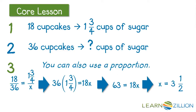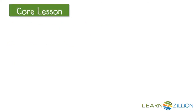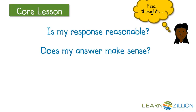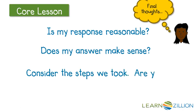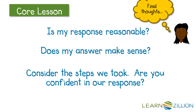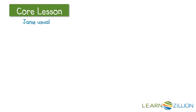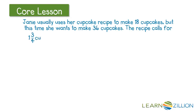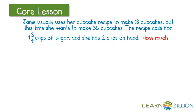So Janie really needs 3 and 1/2 cups of sugar to make 36 cupcakes. Now let's get some final thoughts: Is my response reasonable? Does my answer make sense? Did I consider all of the steps that I took? And am I confident in my response? I've found in two different ways mathematically that Janie needs 3 and 1/2 cups of sugar. But did I answer the question? Go back to the original question — Janie usually uses her cupcake recipe to make 18 cupcakes, but this time she wants to make 36. The recipe calls for 1 and 3/4 cups of sugar and she has 2 cups on hand. How much more sugar does she need? I haven't quite answered my question yet.